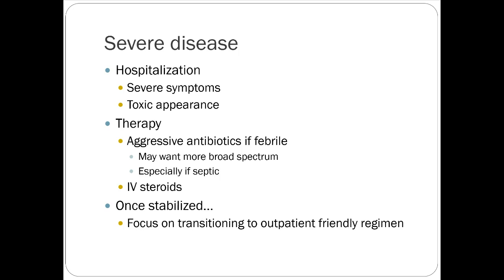Severe disease can also apply to a first-time Crohn's presentation during a flare. You'll see this approach vary by provider — some prefer the old-school step-up, others are aggressive about starting immunomodulating therapy immediately. Severe disease usually means hospitalization, driven by severe bleeding symptoms or a septic-looking toxic appearance — often sepsis from GI contents leaking into another organ, like a bladder fistula causing urosepsis, or a peritoneal cavity infection.